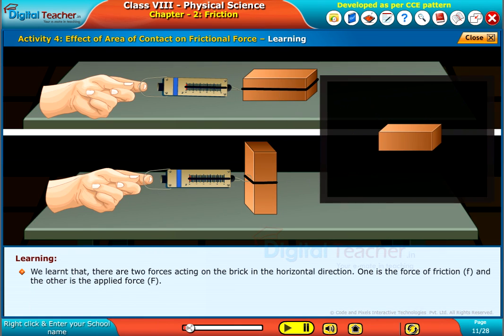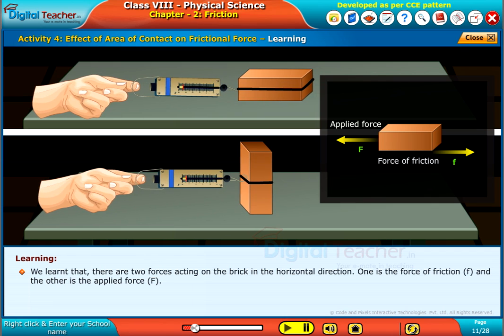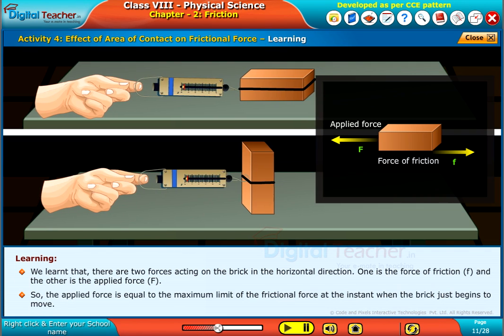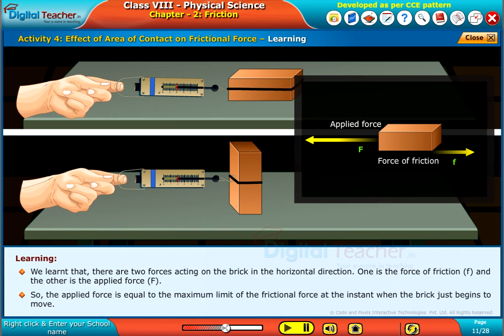We learned that there are two forces acting on the brick in the horizontal direction. One is the force of friction and the other is the applied force. So, the applied force is equal to the maximum limit of the frictional force at the instant when the brick just begins to move.